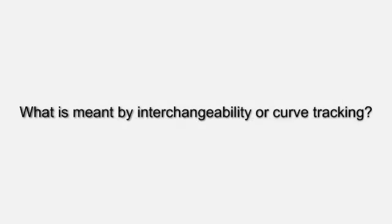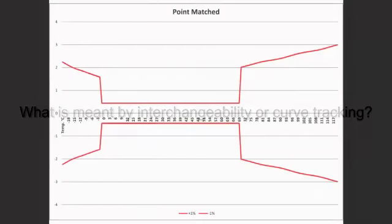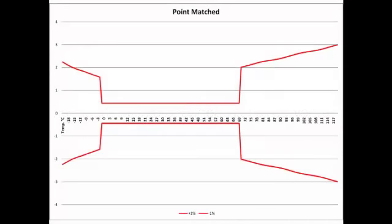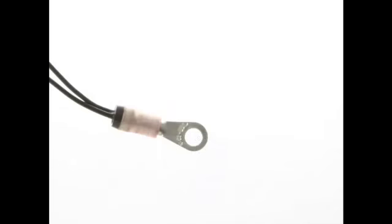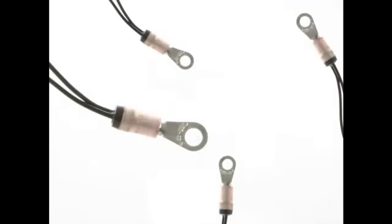A thermistor can be defined as having an interchangeable tolerance of plus or minus 0.1 degrees C over the range from 0 to 70 degrees C. This means that all points between 0 to 70 degrees C are within 0.1 degrees C of the nominal resistance values for that particular thermistor curve. This feature results in temperature measurements accurate to plus or minus 0.1 degrees C, no matter how many different thermistors are substituted in the application.